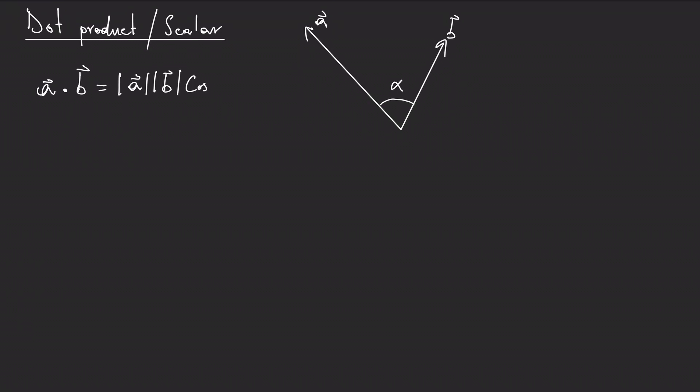We then multiply by the cosine of the angle between the two vectors when they are attached tail to tail. When we attach vector A and vector B tail to tail, the angle that separates them is the angle alpha that enters this equation. This is the definition of how you perform the dot product.